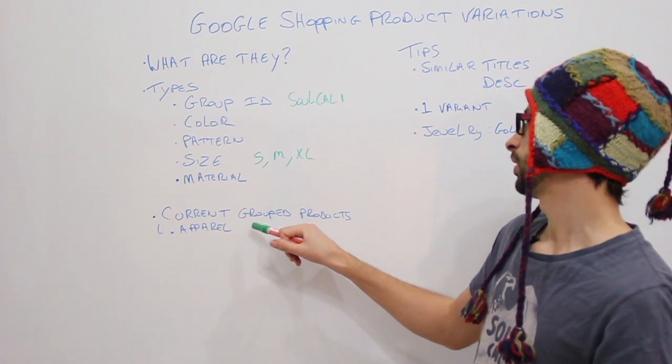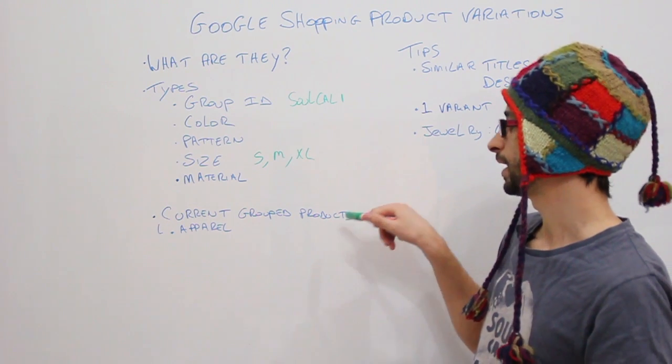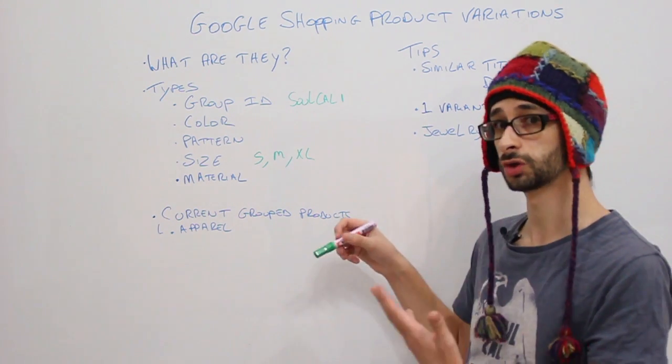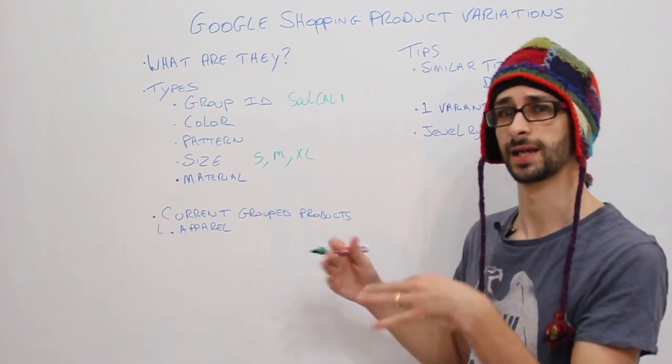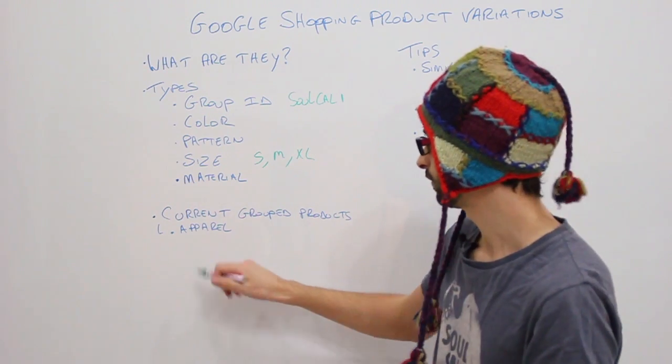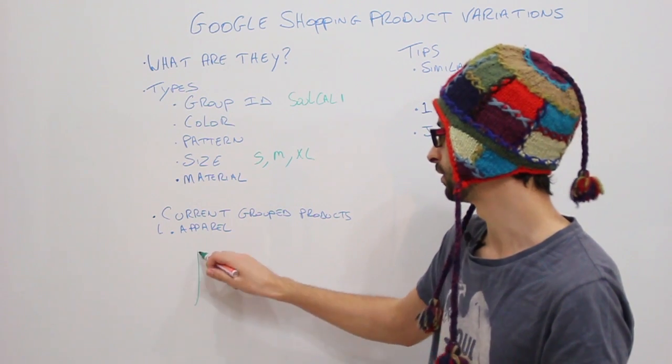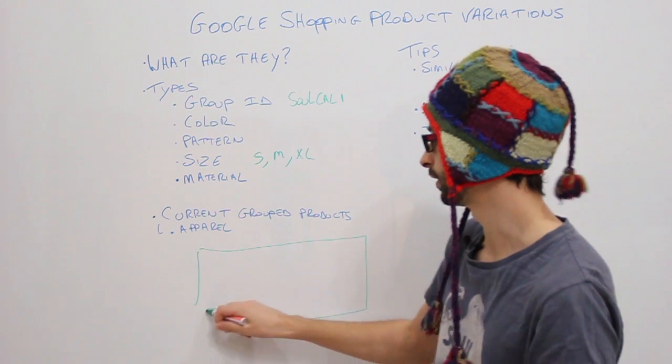Now currently as I mentioned, you can only see on Google Shopping grouped items. So what are these grouped items that you can see on Google Shopping?